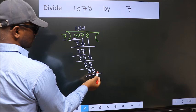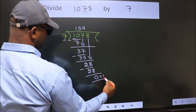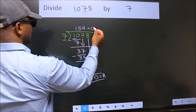No more numbers to bring down, so we stop here. This is our remainder. This is our quotient.